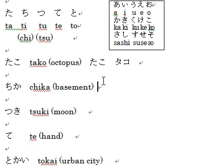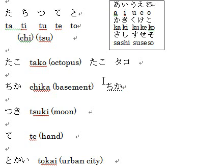Then next vocabulary is チカチカ. Normally I type C H I, but you can also type T I. チカ means basement. So the kanji for Chika — basement — is this one.